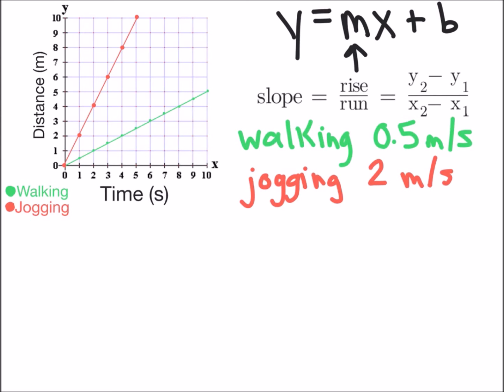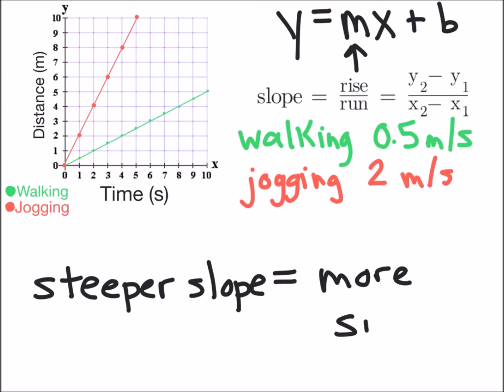And we can compare those two values, the flatter 0.5 meters per second to the more steep 2 meters per second, to make the conclusion that if we have a steeper slope it's going to represent more speed.